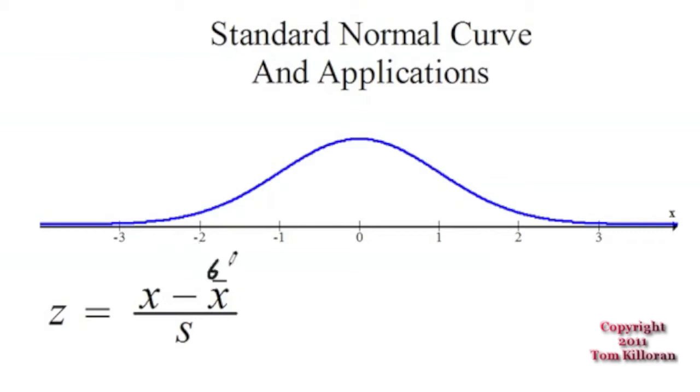That would bring me to 72 inches, and my standard deviation is 3 inches. Then you get 72 minus 69 is 3, and 3 divided by 3 is 1. So that represents one standard deviation above the mean.